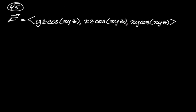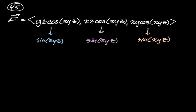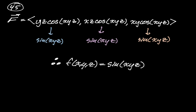For the last problem, the vector field is (yz·cos(xyz), xz·cos(xyz), xy·cos(xyz)). I'll integrate each component with respect to its variable. Integrating yz·cos(xyz) with respect to x: the derivative of xyz w.r.t. x is yz — a perfect chain rule — giving sin(xyz). Integrating xz·cos(xyz) w.r.t. y: derivative of xyz w.r.t. y is xz — also perfect — giving sin(xyz). And integrating xy·cos(xyz) w.r.t. z gives sin(xyz) again. All three agree, so the potential function is f(x,y,z) = sin(xyz).